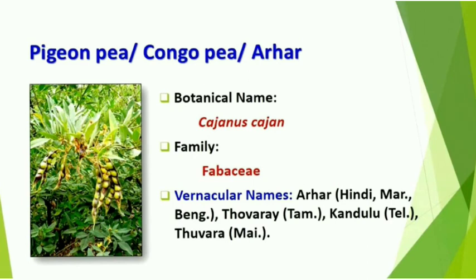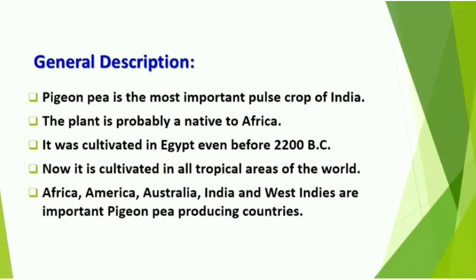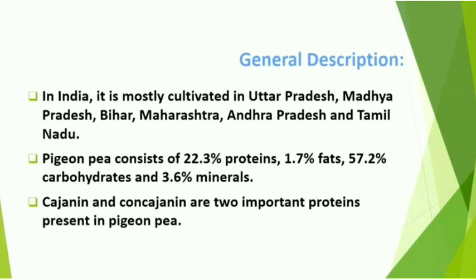Lastly, one of the pulses is pigeon pea, also called Congo pea or tur. The botanical name is Cajanus cajan, family Fabaceae. Vernacular names include tur or arhar in Hindi and togribele in Kannada. Pigeon pea is the most important pulse crop in India and is probably native to Africa. It was cultivated in Egypt even before 2200 BC. Now it is cultivated in tropical areas of the world, including Africa, America, Australia, India, and the West Indies.